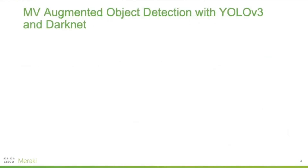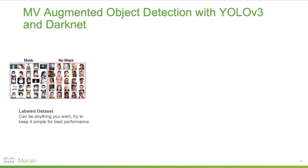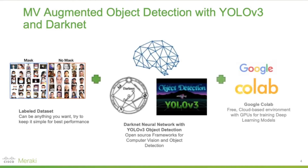What we're going to be using is an object detection system which is open source — it's called YOLO V3. And we're also going to be using Darknet for training the neural network that will detect these specific objects. What we are going to be trying to detect is people that are wearing masks and people that are not wearing masks. And then we're going to use an open source tool called Google Colab for the purposes of training this machine learning system.